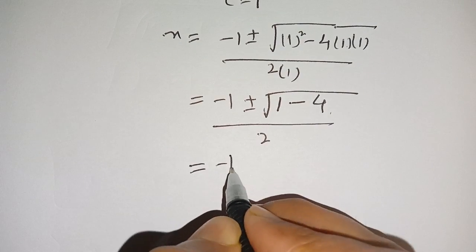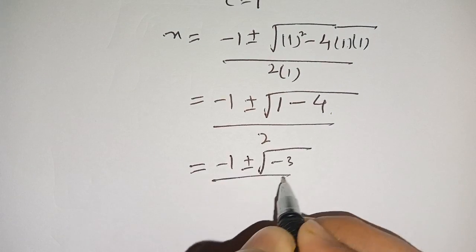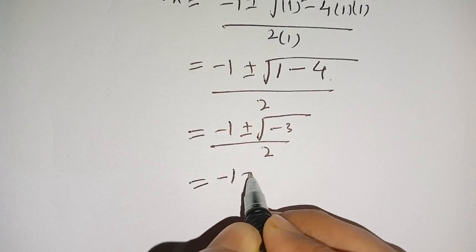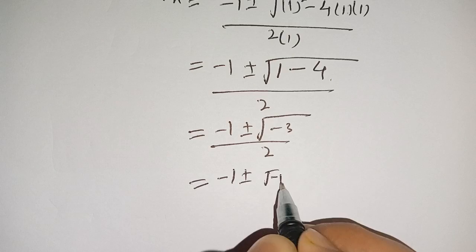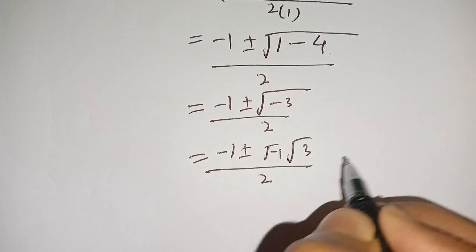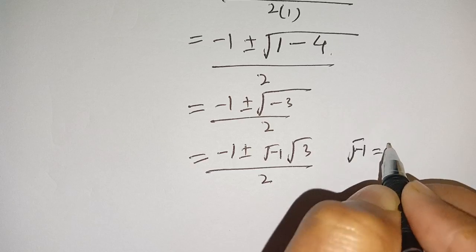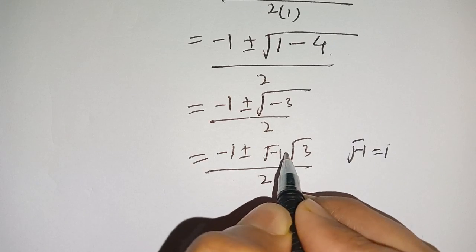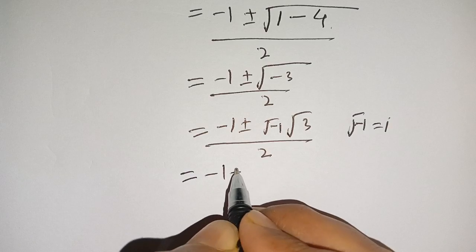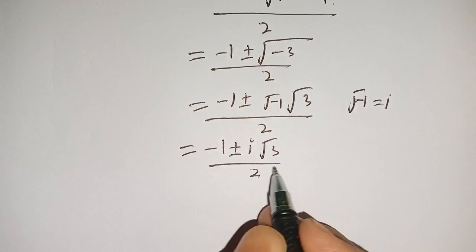Now we have minus one plus or minus square root of minus three, divided by two. We can rewrite this as minus one plus or minus square root of minus one times square root of three, divided by two. Since we know that square root of minus one is equal to iota, we replace it to get minus one plus or minus iota root three, divided by two.